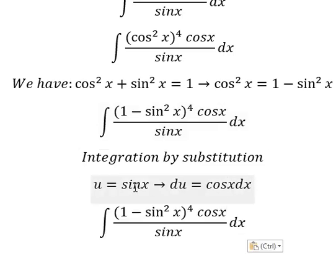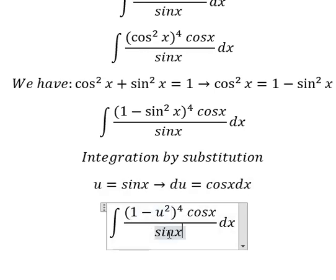So we substitute sin x with u and get u squared. This changes to u, and cos x dx changes to du.